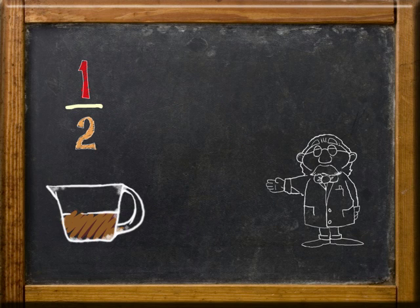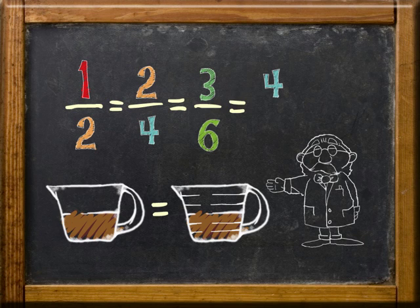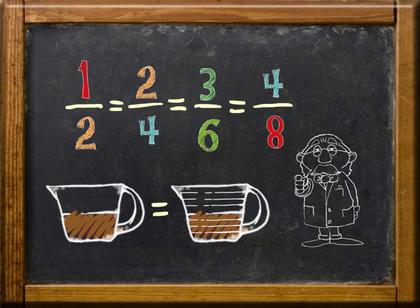So, one-half equals two-fourths equals three-sixths equals four-eighths. You should have the hang of it by now.